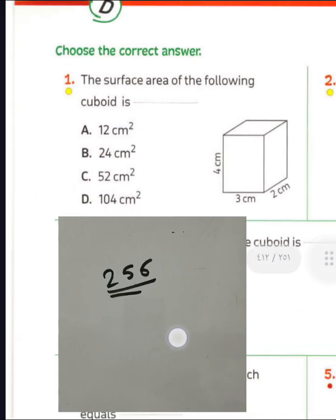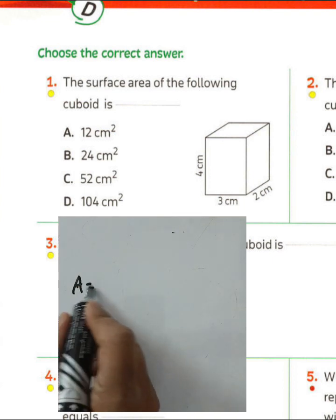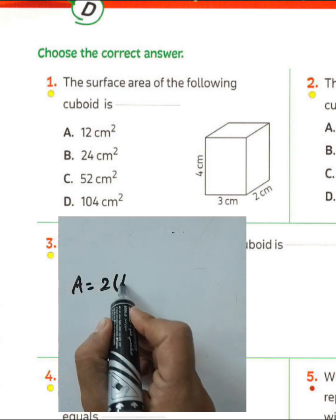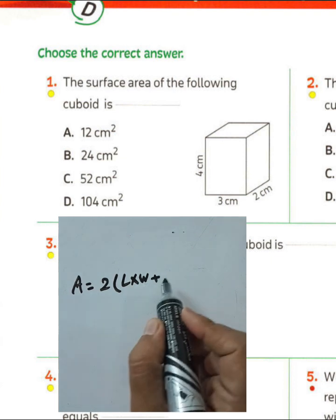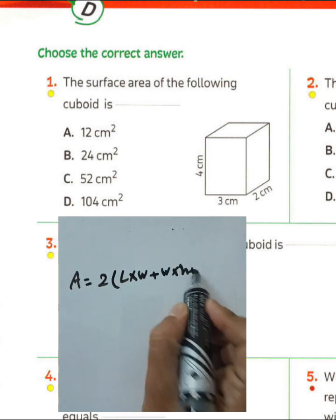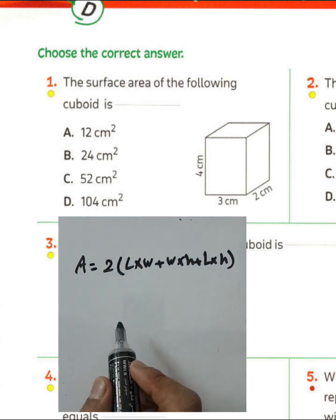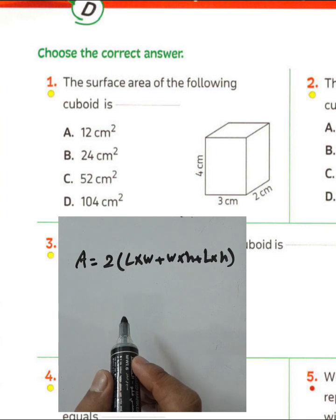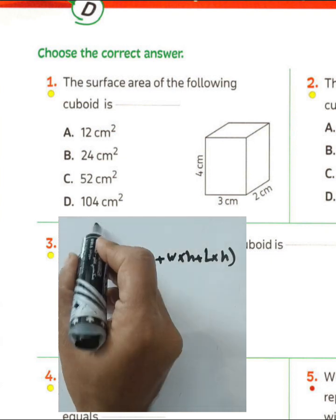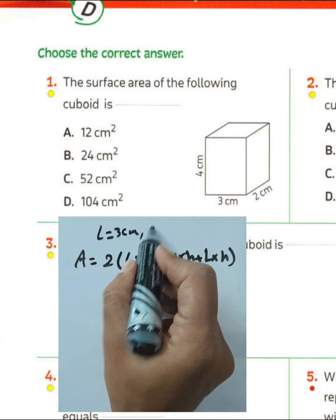The surface area of the following cuboid is? We can find the surface area of a cuboid by writing the rule: multiply lengths by widths, widths by height, and lengths by height.